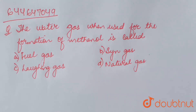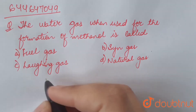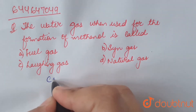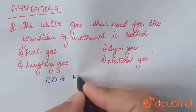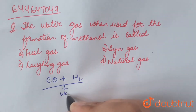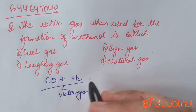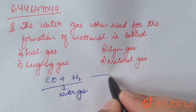The question is: the water gas, when used for the formation of methanol, is called — options are fuel gas, thin gas, laughing gas, natural gas. Water gas, that is CO plus hydrogen gas, is called water gas. When water gas is used for